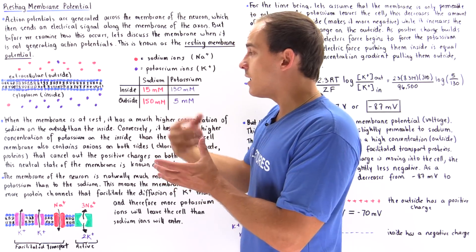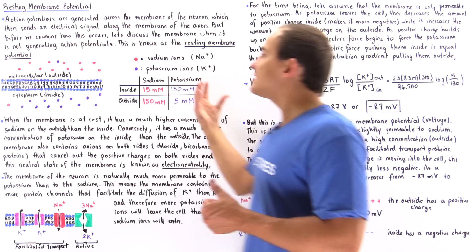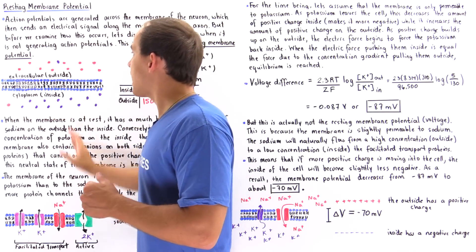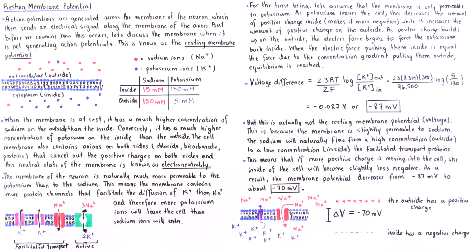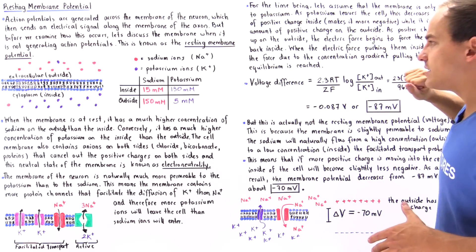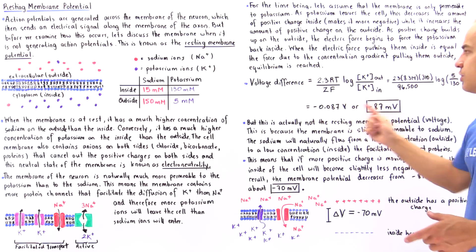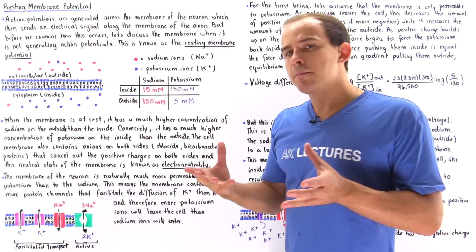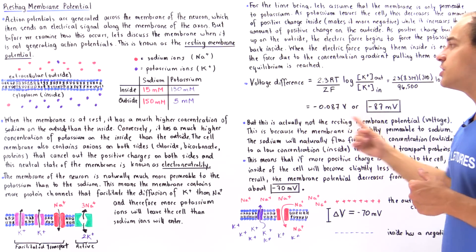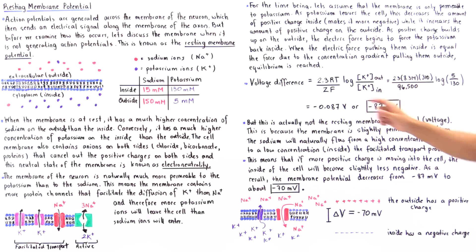Eventually, when the electric force due to the positive charge build-up on the outside is exactly equal to the concentration gradient force pushing potassium outward, equilibrium is reached. We can use the Nernst equation to calculate the voltage difference between the inside and the outside of the cell due to our potassium ions, since the neuron is basically a concentration cell.